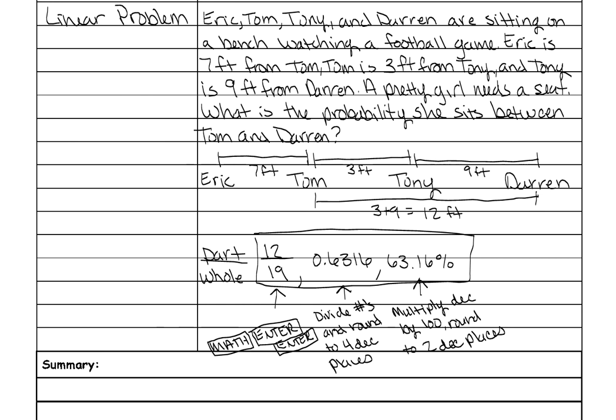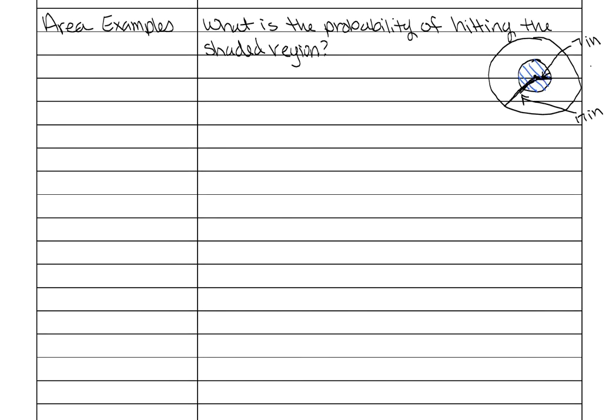Now I want to show you an area example on the back. In this situation, we're given basically a bullseye. And it wants to know what the probability is that we'll hit the shaded region or just the bullseye. So what you do is still part over whole. You're just going to do the part of the area of the smaller circle over the whole of the entire circle, so the bigger outside circle. So it's still part over whole.